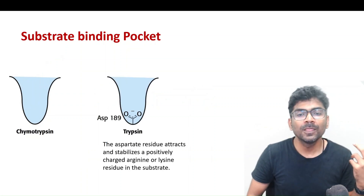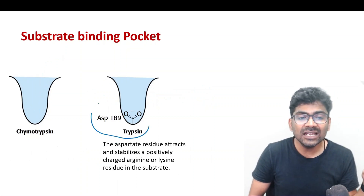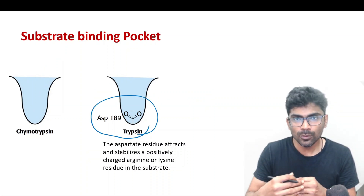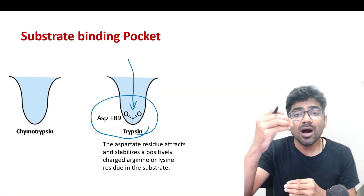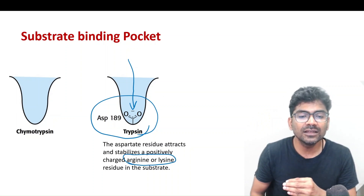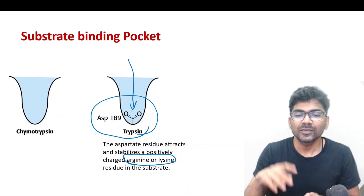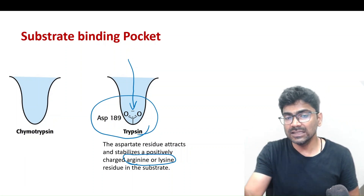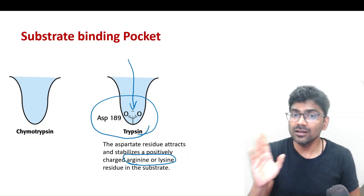What about trypsin? The substrate-binding pocket of trypsin is lined with negatively charged aspartate residues. So during catalysis, when the substrate binds, positively charged amino acids like arginine or lysine can bind with the substrate-binding pocket. Therefore, trypsin will cleave on the carboxyl side of positively charged amino acids like arginine or lysine.